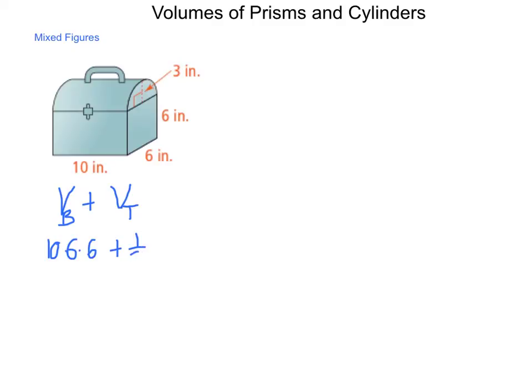Now it's half of a cylinder, so we have half pi r squared h. In this case, we have ten times six is sixty. Sixty times six is three hundred sixty plus...